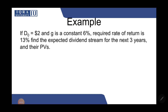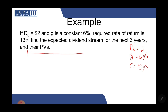In this video we will be doing an example for constant growth stocks. D0 is equal to 2, g is a constant 6%, and the required rate of return r is 13%. We need to find the expected dividend stream for the next three years and their present values.